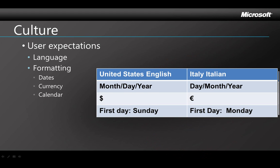Users have expectations about how the user interface should look. Obviously they want to see labels and data in their own language, and they'd like to see dates formatted the way they're used to, like day-month-year instead of month-day-year, if that's the standard way in their country. And they expect the local symbol used for currency, like the euro instead of the dollar sign. Even calendars can be different, because different countries use a different day for the first day of the week. And it can also affect things like sort order, because different languages handle that differently.